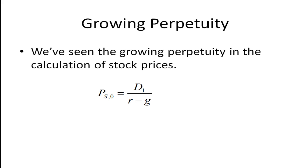In terms of the growing perpetuity we've actually seen this when we value a stock. The price of the stock today, time period zero, that's the subscript zero here, is equal to the dividend one period in the future divided by R, the required return, minus G, the growth rate of dividends.